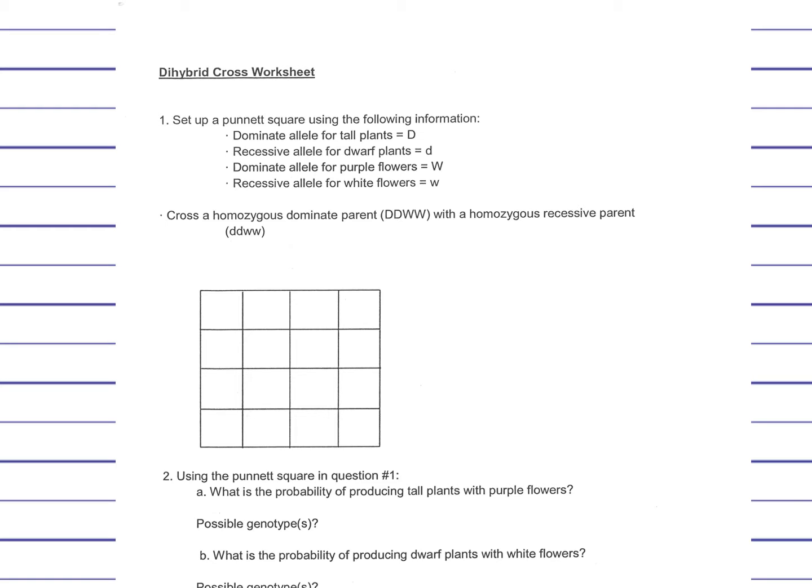So the clue or key they've given you here is tall plants is a big D, dwarf plants is a small d, those are the alleles for height. Purple flowers, a big W, white flowers, small w. So already there I'm seeing that white flowers are recessive and that the dwarf plants is also recessive. The other two are the dominant traits.